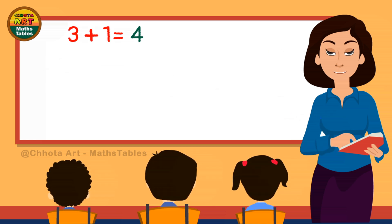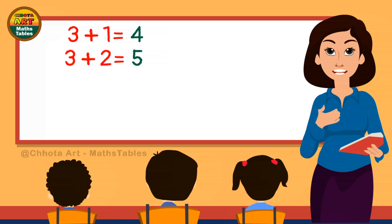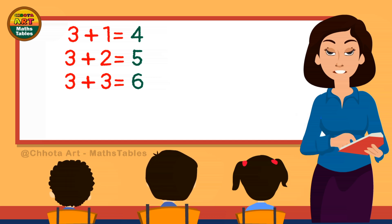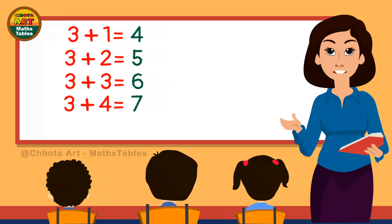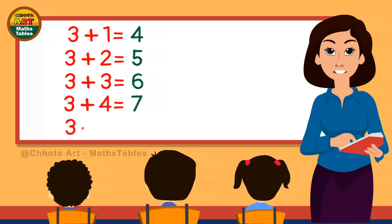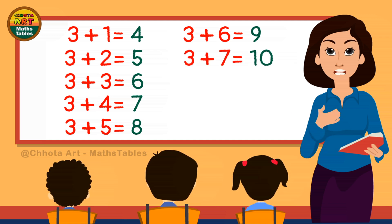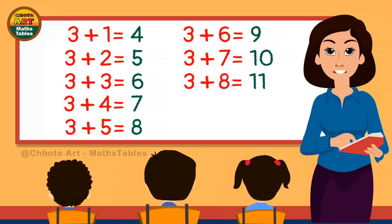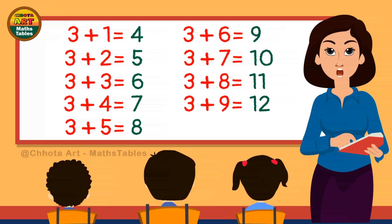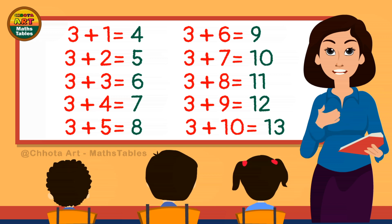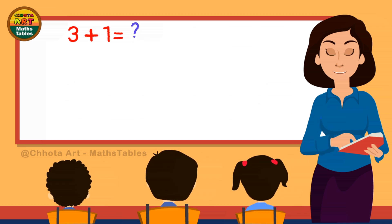3 plus 1 is 4. 3 plus 1 is 4. 3 plus 2 is 5. 3 plus 2 is 5. 3 plus 7 is 10. 3 plus 9 is 12. 3 plus 9 is 12. 3 plus 10 is 13. 3 plus 10 is 13. 3 plus 1 is 4.